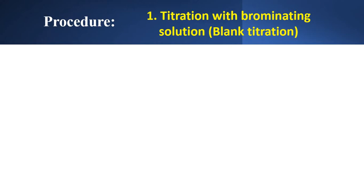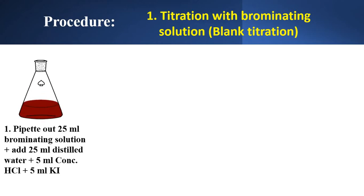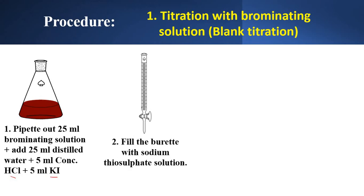Now we will see the procedure. The first part is titration with brominating solution — that is, the blank titration. You have to pipette out 25 ml of brominating solution. To this, add 25 ml of distilled water, then 5 ml of concentrated HCl and 5 ml of potassium iodide. The solution becomes dark brown. Then fill the burette with sodium thiosulfate solution.